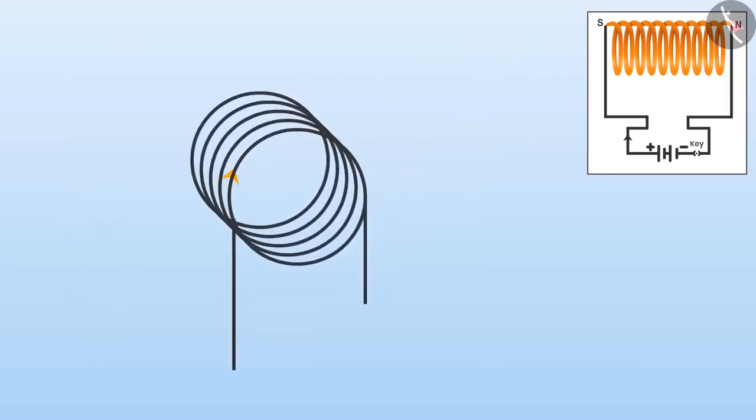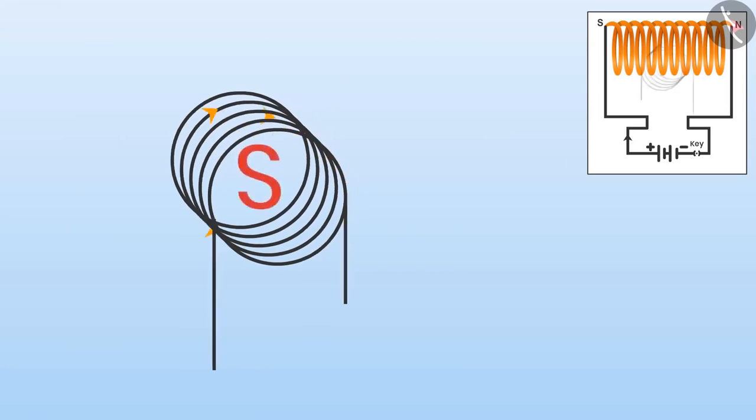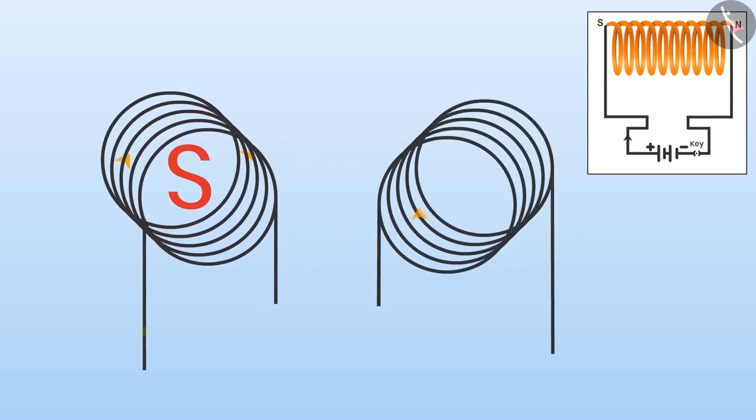On one side, the current is flowing in clockwise direction. That means this will be the south pole of the solenoid based on the rule we learnt before. On the other side, the current is flowing in an anti-clockwise direction. That means this will be the north pole of the solenoid. In this way, we can see the field lines easily.